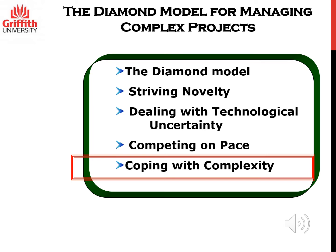The higher the number of units and the larger the size of those units, the higher the complexity of the project. Please remember the definition of structural complexity: it is about a higher number of units that interact in different ways and we do not know the outcomes of those interactions. This means that the higher the number of interconnections or interdependencies between the units, the more complex the projects, bringing unpredictability about the outcomes of those connections.